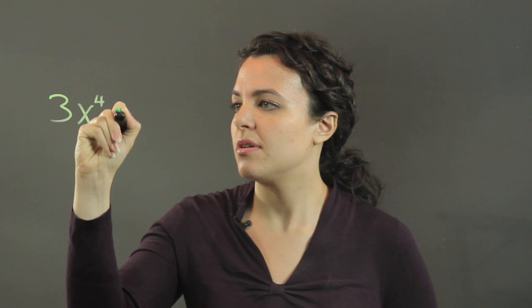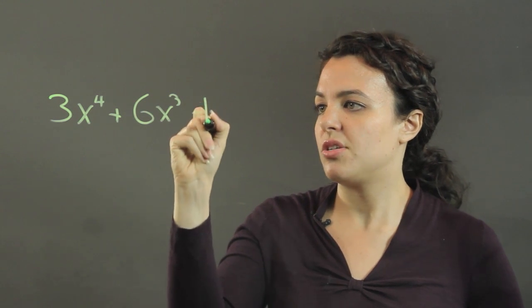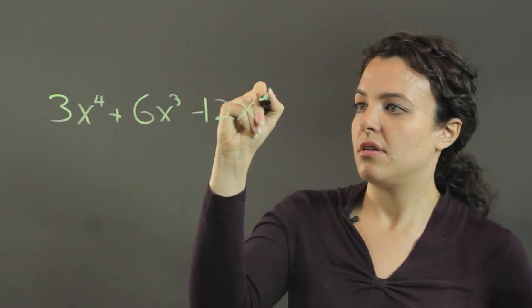So a polynomial, let's do one like 3x to the fourth plus 6x cubed minus 12x squared.